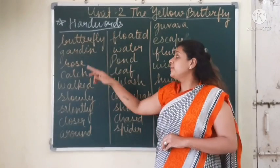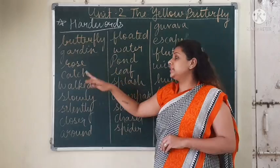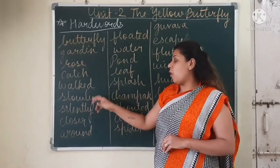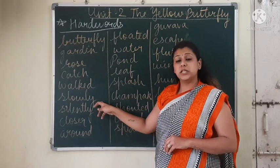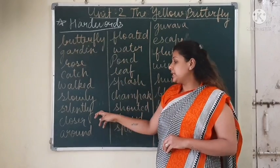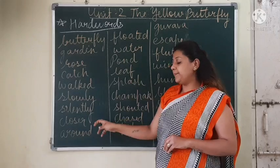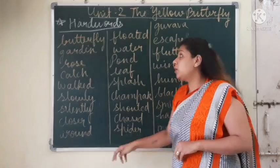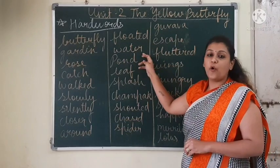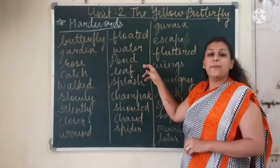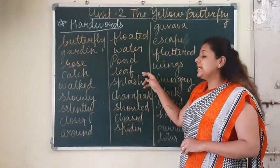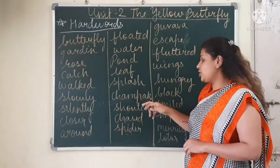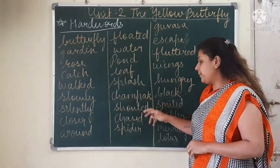Hard words: butterfly, garden, rose, catch, walk, slowly, silently, closer, around, floated, water, pond, leaf, splash, jump up.